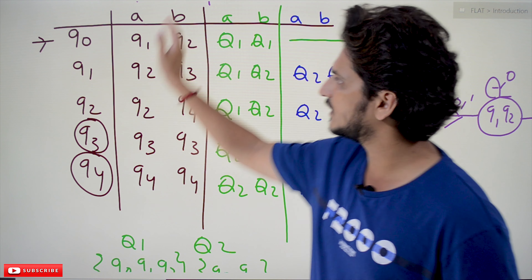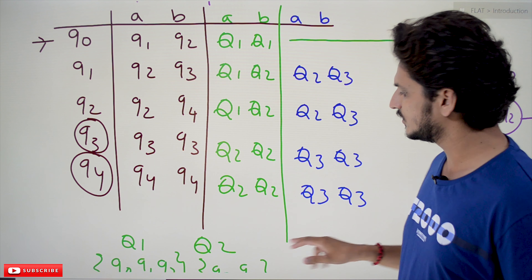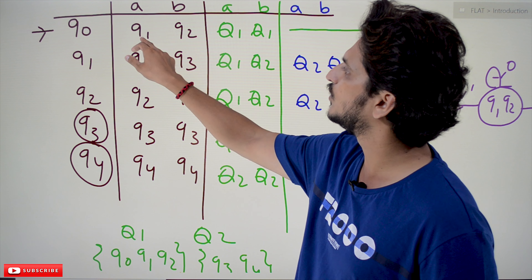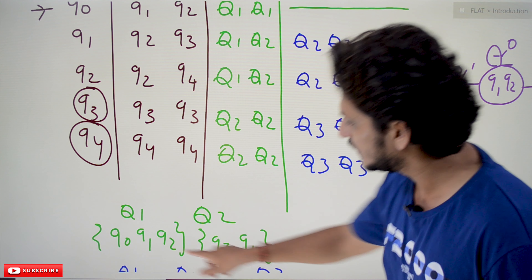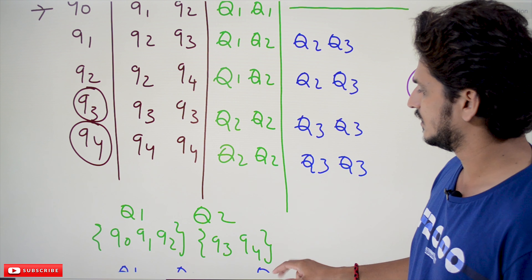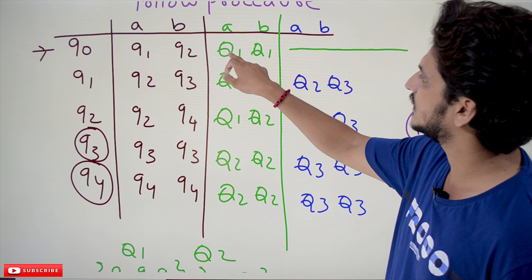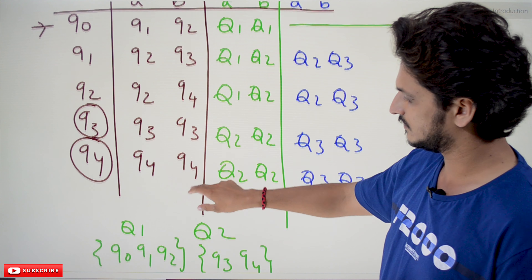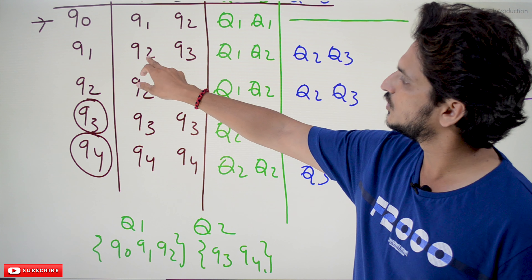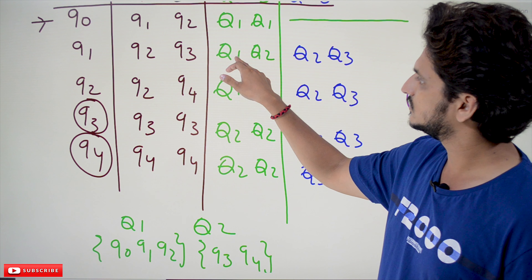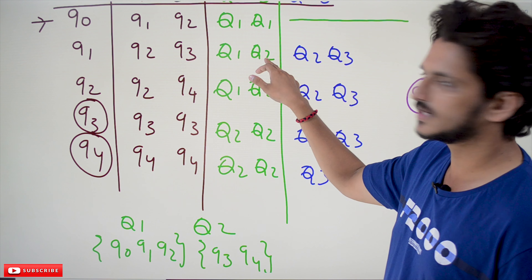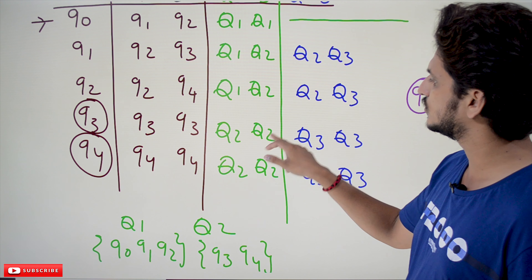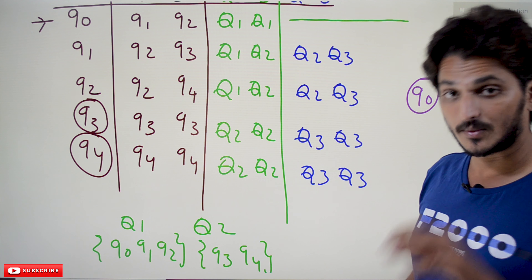Now, for each state in our DFA, we apply input symbols and see which set the resulting state belongs to. On applying input A to Q0, we move to state Q1, which is in Set Q1. State Q2 is also in Set Q1. State Q3 is in Set Q2, so we write Q2. Repeating for all states gives us: Q1, Q2, Q2, Q2, Q2, Q2, Q2.